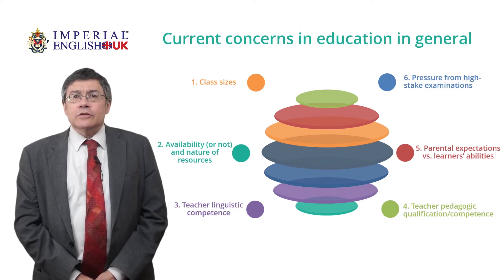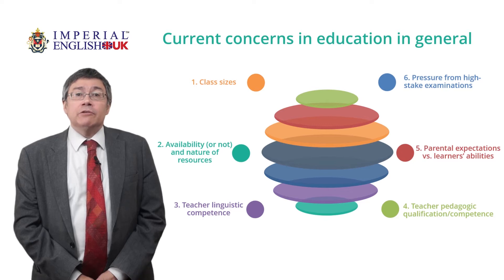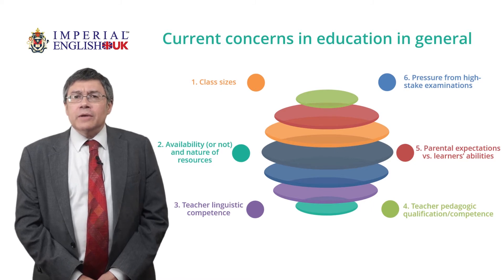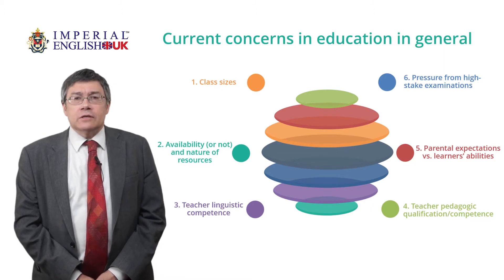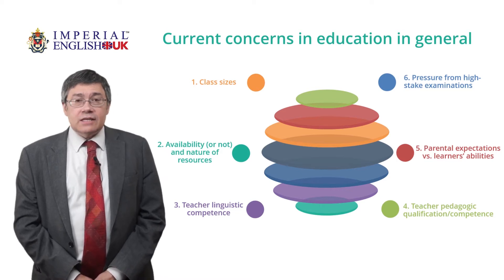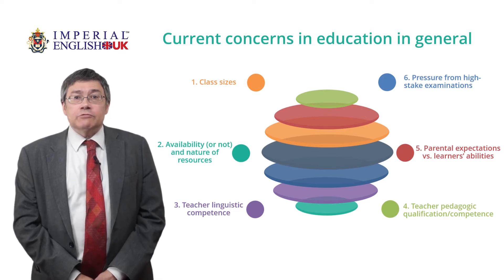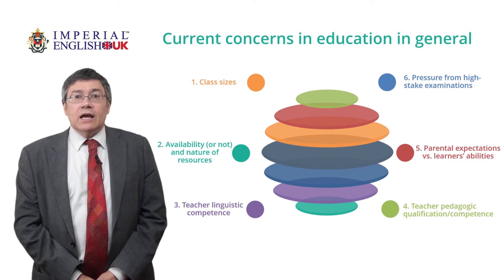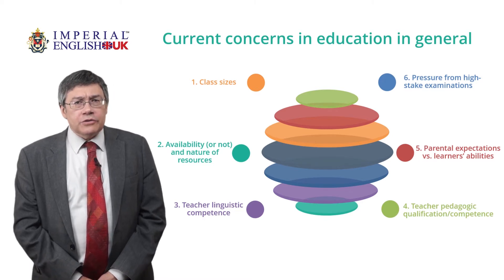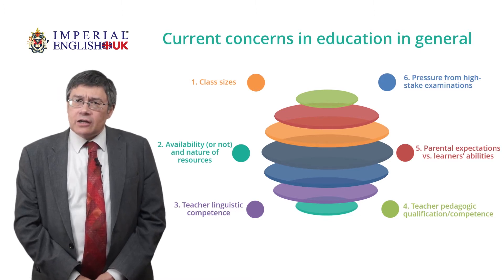Please note that points 2 to 4 are among the aims of the Imperial English UK courses and this training. Point 5 may not be relevant to all of you, but the ILP and learner autonomy elements of the Imperial English courses help justify the approach teachers take and the standards they set, while the use of can-do statements and the close relationship between course assessment tests and course content removes pressure from students who have worked steadily throughout the course. Can you think of other challenges before we begin with large classes?